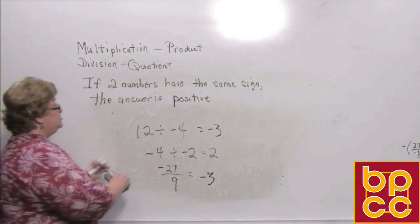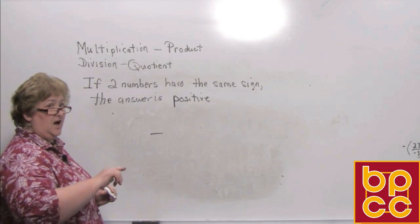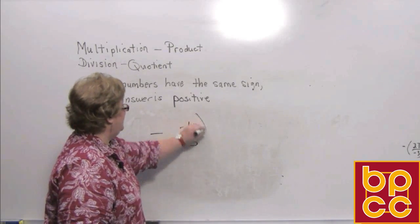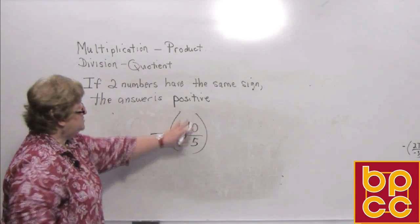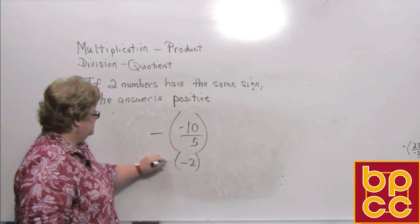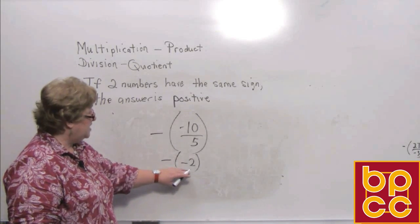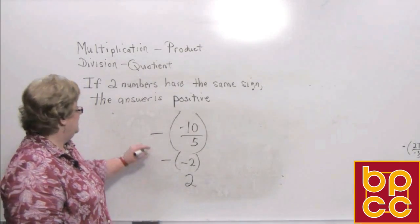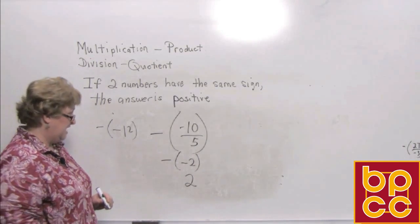Now let's look at this negative sign on the outside, which means 'opposite of.' Let's say we have negative 10 divided by 5, with a negative sign on the outside. First I work the problem: one negative makes a negative, so 5 into negative 10 is a negative 2. But there's a sign out here that says the opposite of negative 2 — and the opposite of a negative 2 is a positive 2. We saw this same idea with absolute value and when a negative sign was placed on the outside of a number, saying 'change me to the opposite.'